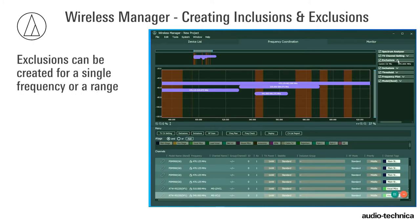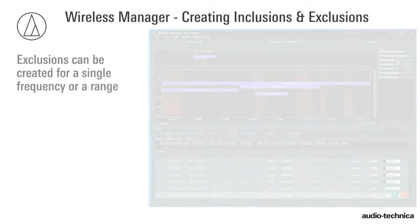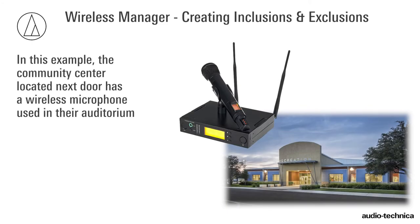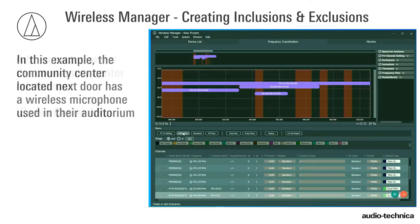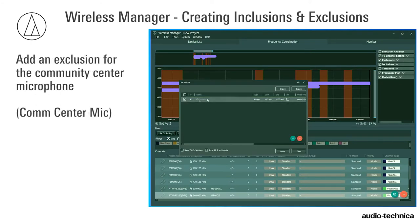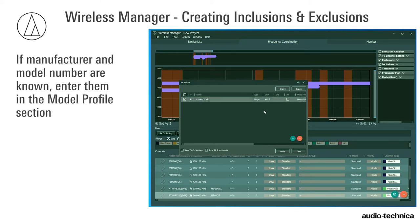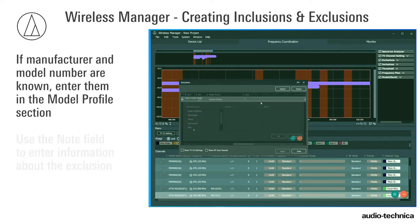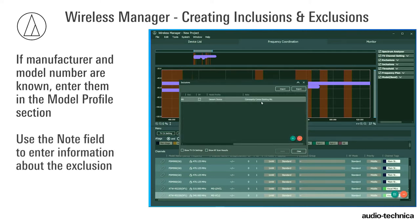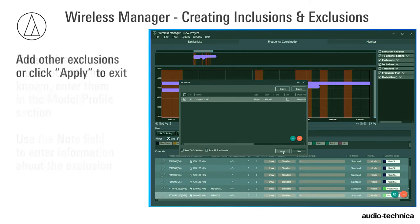Exclusions can be created for a single frequency or a range. In this example, the Community Center located next door has a wireless microphone used in their auditorium. Add an exclusion named Community Center Mic. Under Type, select Single, and under Start, enter its frequency. If the manufacturer and model are known, they can be entered in the Model Profile section. Use Notes to enter information about the exclusion. Add other exclusions or click Apply to exit.